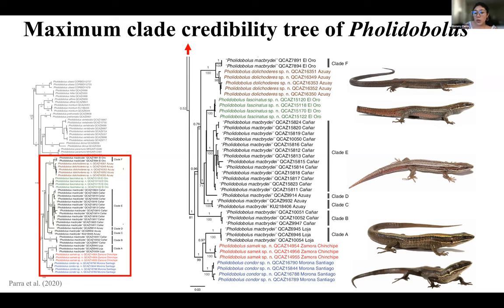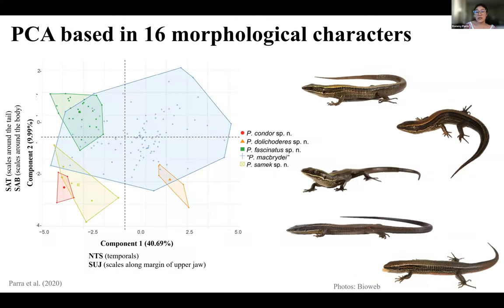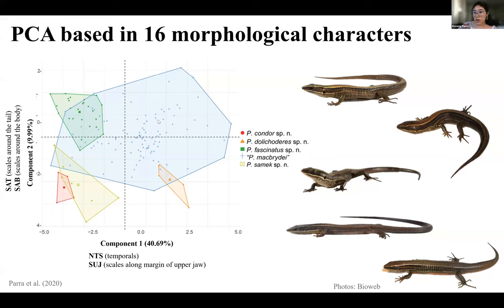In addition to molecular data, we also took into account morphological data — measurements and scale counts. We did this because the new species were similar to and sister clades of Pholidobolus macbrydei, so we tried to assess the degree of morphological differentiation among them using a PCA based on 16 morphological characters, where the most important components correlated with number of scales. In general there is wide overlap with the Pholidobolus macbrydei species complex; however, three of the four new species are clearly different. We believe this is because Pholidobolus genus has cryptic morphology and some traits are challenging for species delimitation.